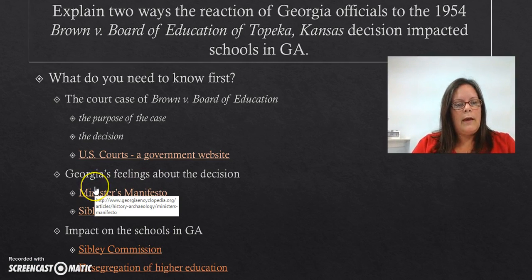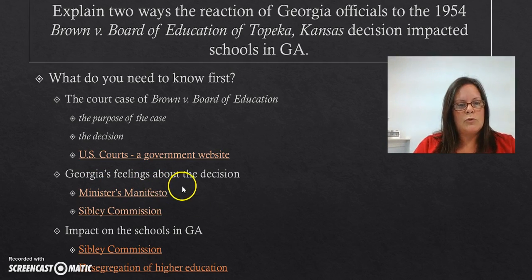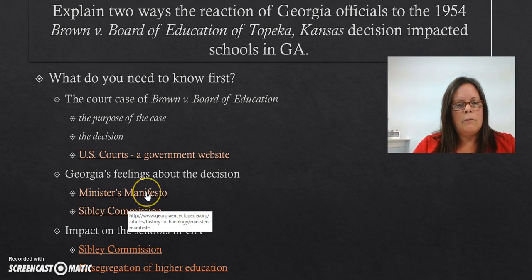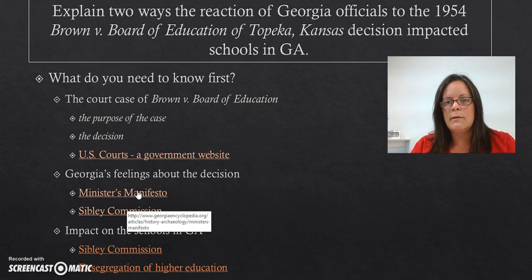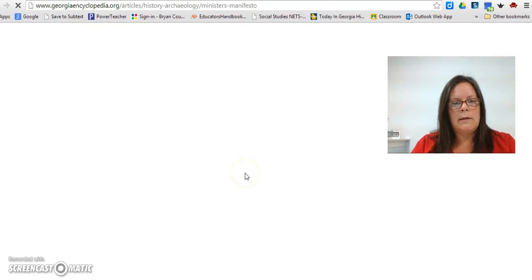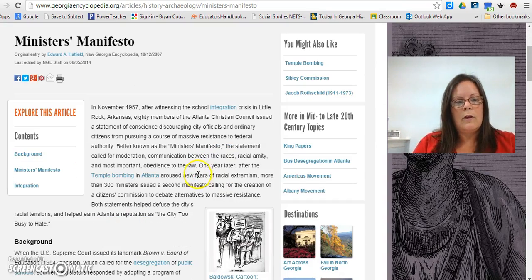After you've done that, we start narrowing our focus and will look specifically at Georgia. The next two articles come from the Georgia Encyclopedia: the Minister's Manifesto and the Sibley Commission. If you are using the suggested questions on the two-column notes, you'll just click the links and read to respond to those questions.